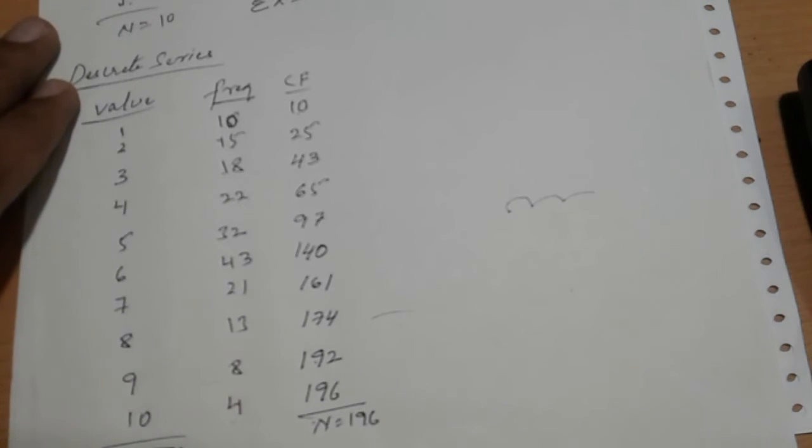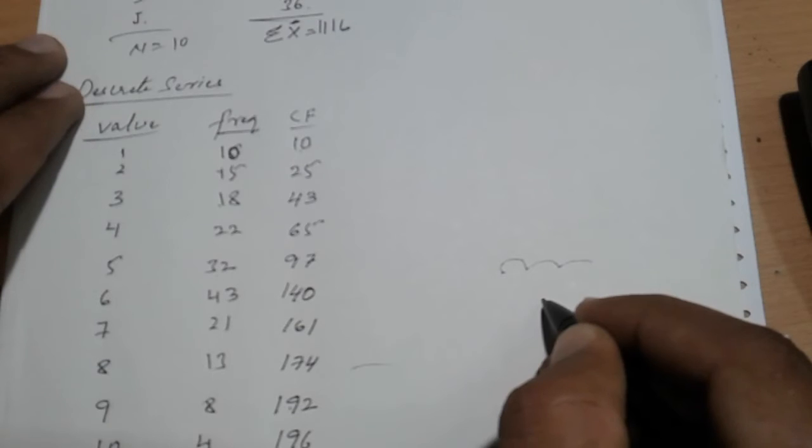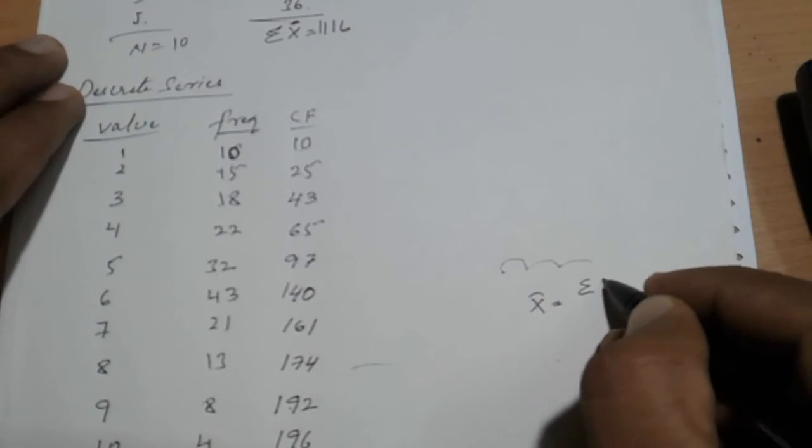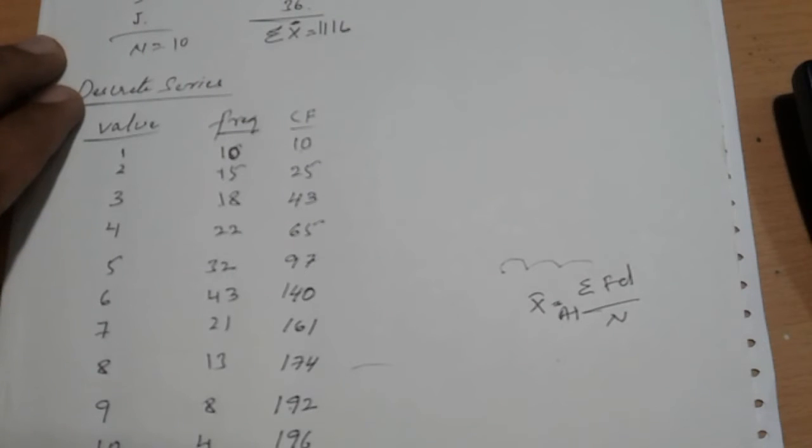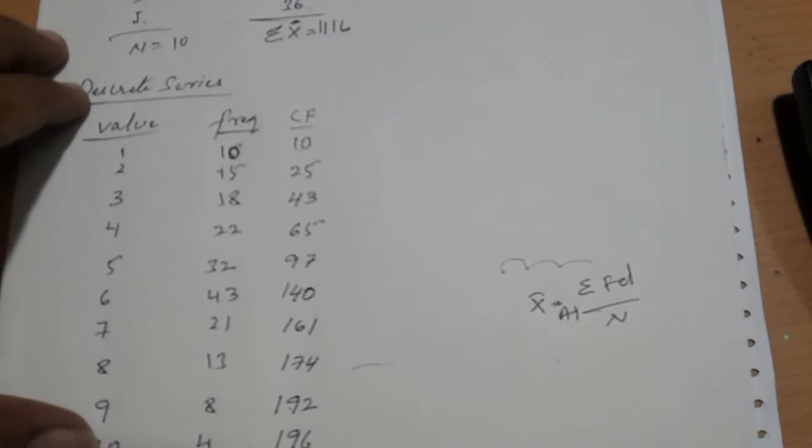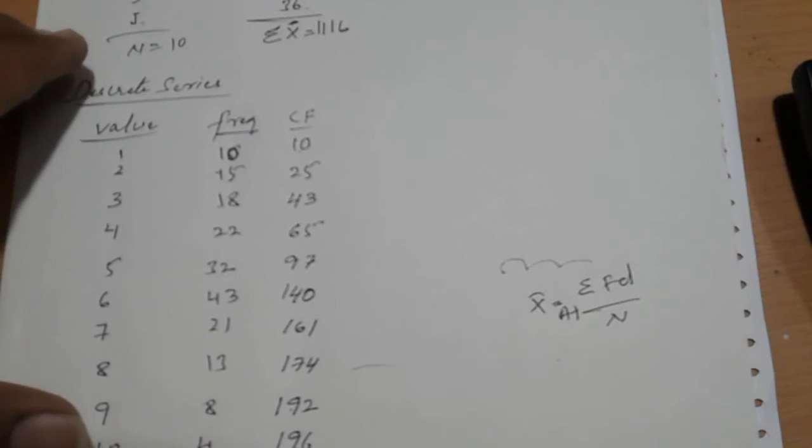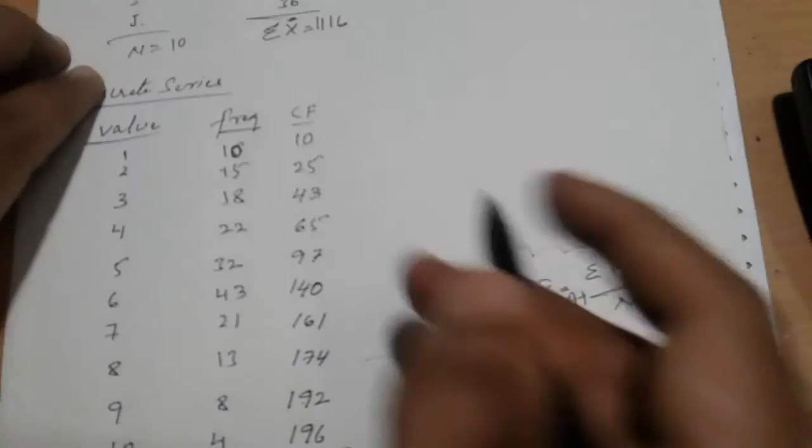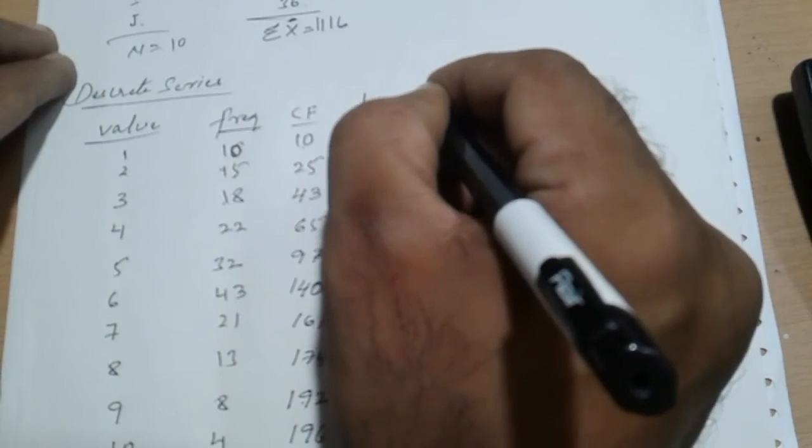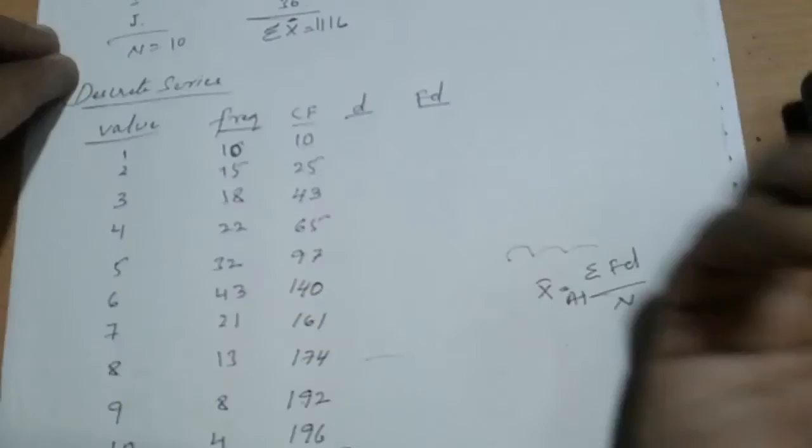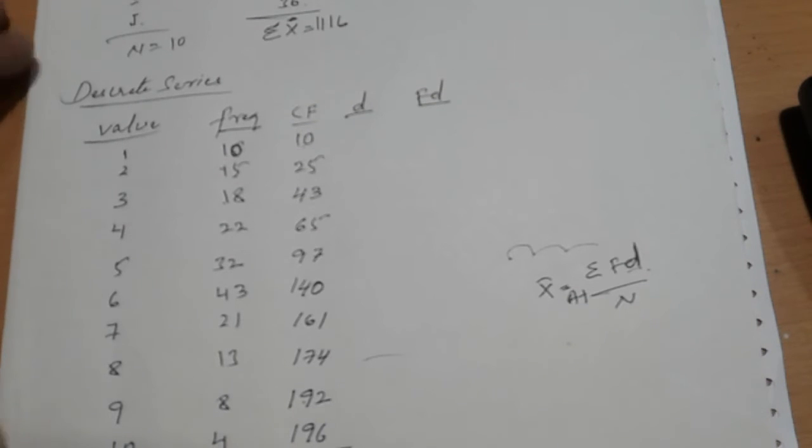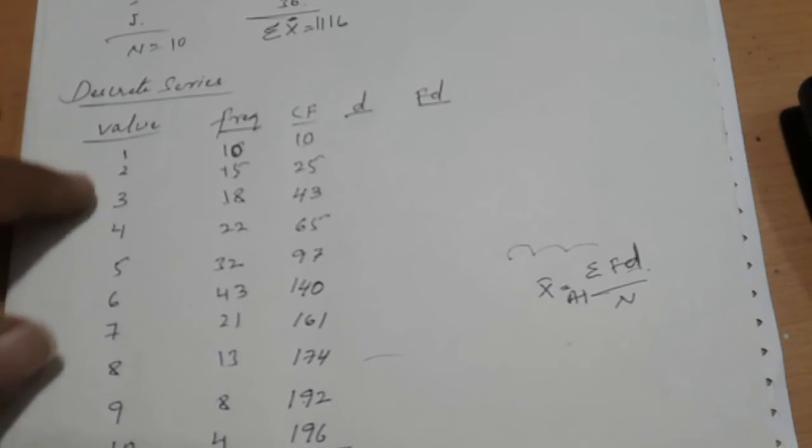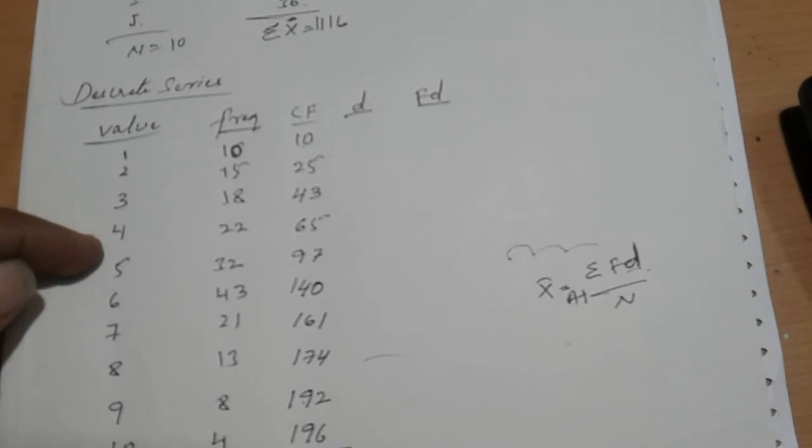Now, what do you have to do? First write the formula. What is the formula? Mean bar is equal to Sigma fd divided by N, and here A plus should be there. So how do you calculate these? First, calculate d, then fd. Take d, then calculate f into d. A means assume anything from x. For example, we are assuming 6.